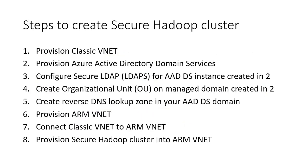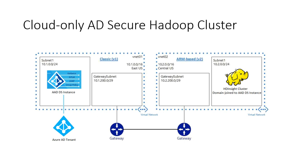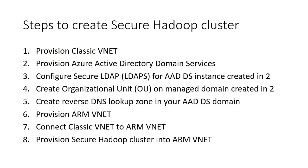Steps to create a secure Hadoop cluster: provision classic vNet, provision Active Directory domain services, configure secure LDAP for the AD instance, create an organization unit and create a reverse DNS lookup zone for AAD, then provision your ARM vNet and connect it to the classic vNet via peering, and finally provision the secure Hadoop cluster in the ARM vNet. You can see you have two vNets — the ARM vNet and the classic vNet.